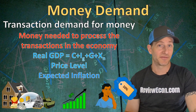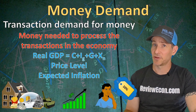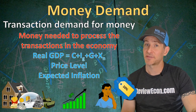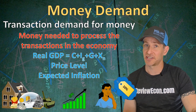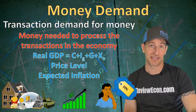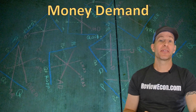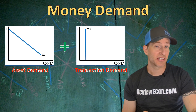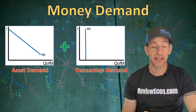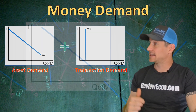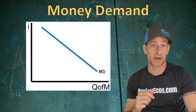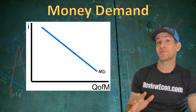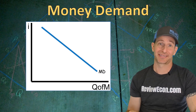Finally, we have expected inflation. When people expect more inflation, they demand more money, and when they expect less inflation, they demand less money. If we add together the asset demand for money with the transaction demand for money, it gives us a downward sloping demand for money curve, and it looks like most other demand curves you've already learned about in this class.